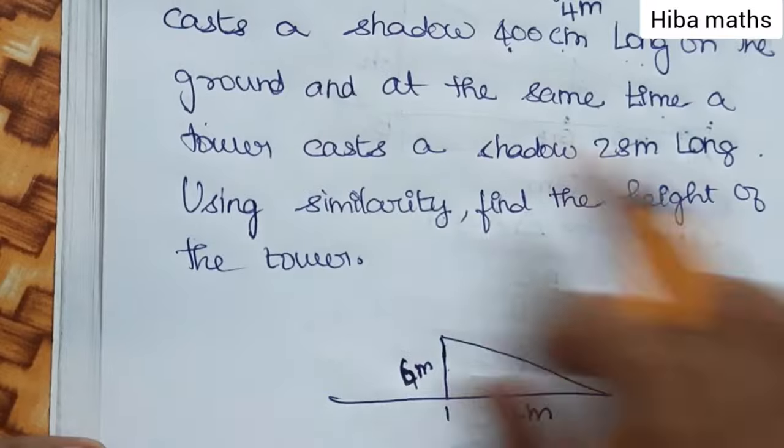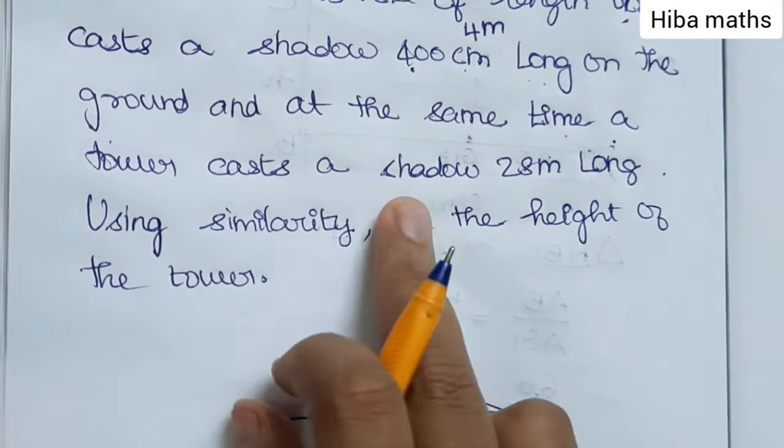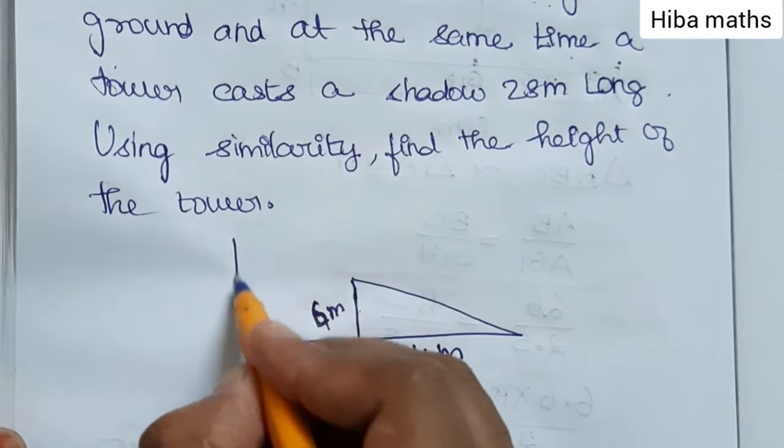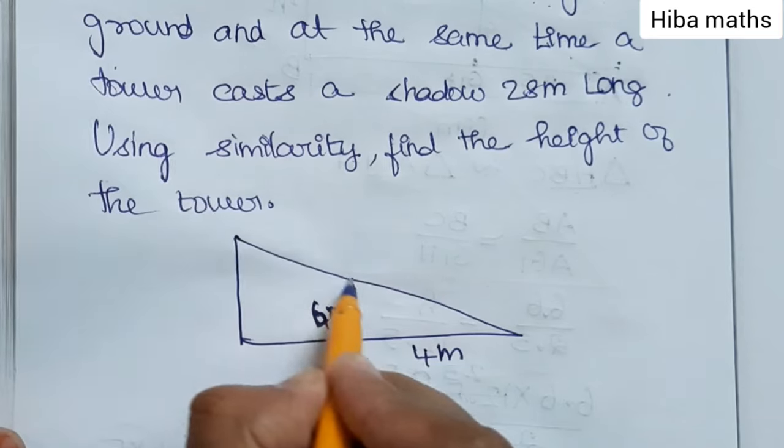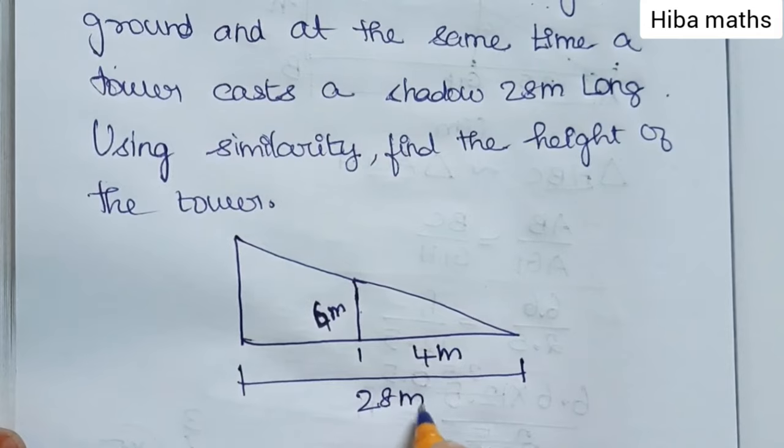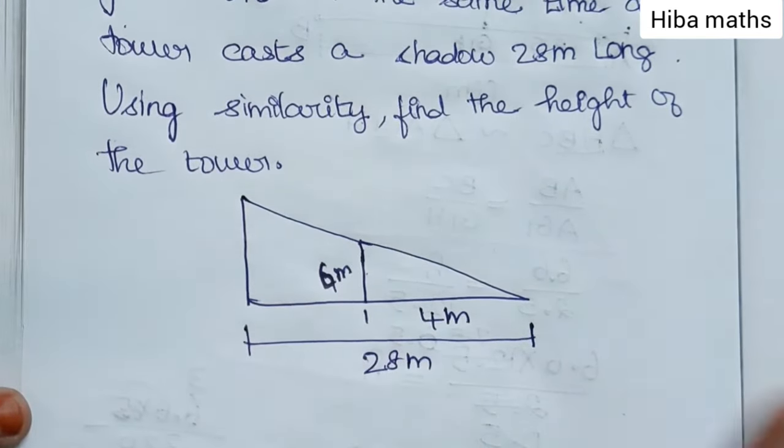At the same time, a tower casts a shadow 28 meters long. At the same time, there is a tower. The shadow is 28 meters long. Using similarity, find the height of the tower.